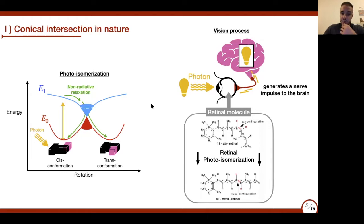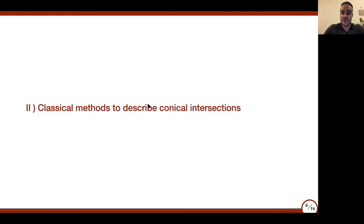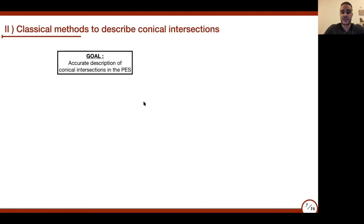I hope that thanks to these two examples—photodissociation and photoisomerization—you are now more convinced about the importance of conical intersections in nature. Now let's switch to how we could try to describe conical intersections with classical simulation.